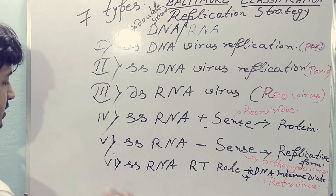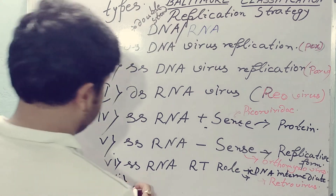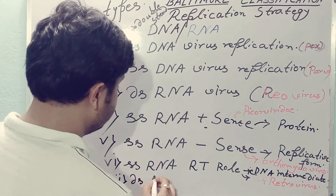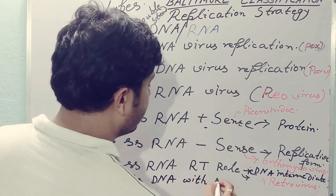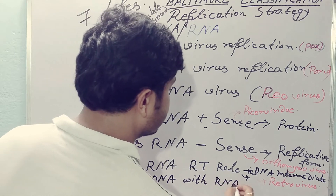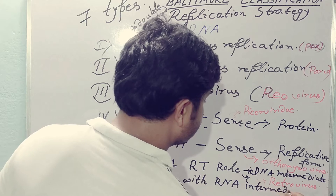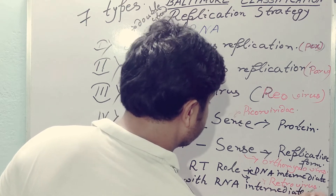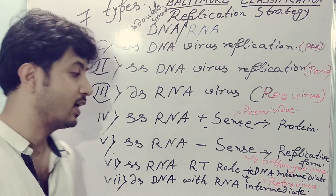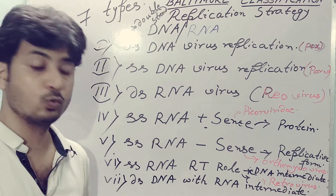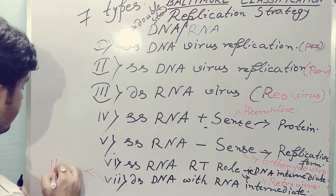The last but not the least is Class 7: double-stranded DNA virus with RNA as an intermediate. This is a very exclusive family. As an example, you can take Hepatitis B.